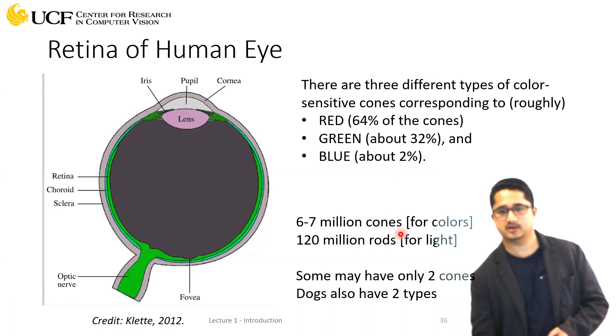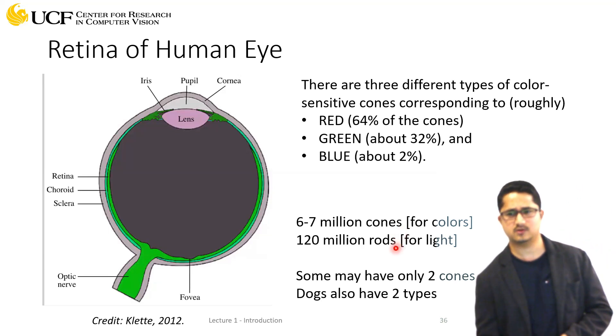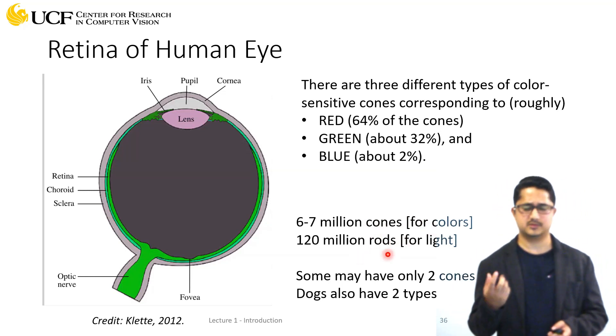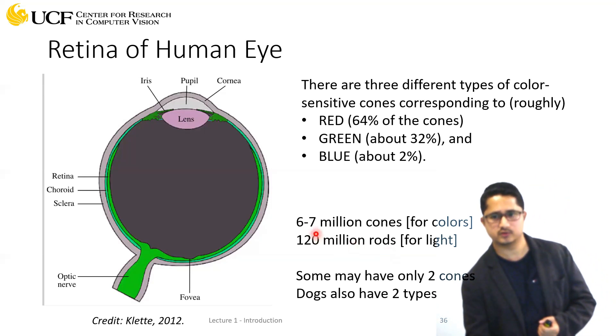The other important perceivers are rods. While cones are responsible for colors, rods allow us to see in very dim light. These are much more numerous than cones—roughly 120 million rods.